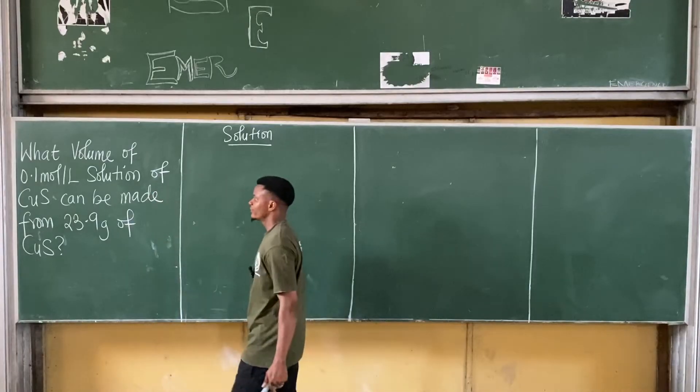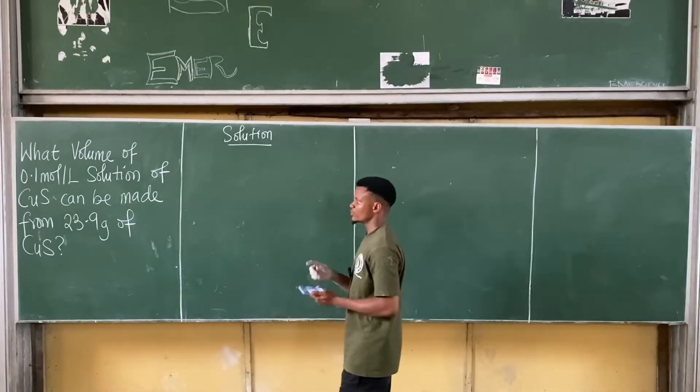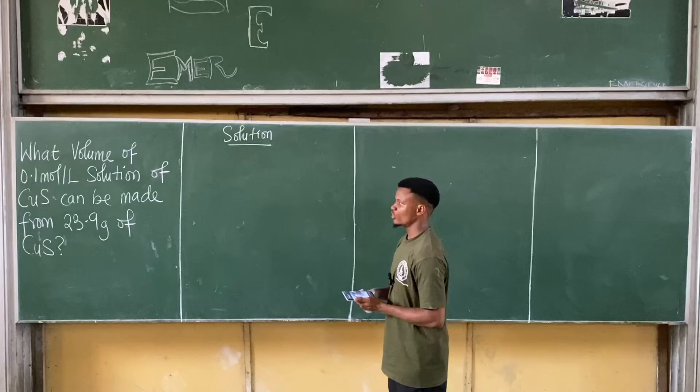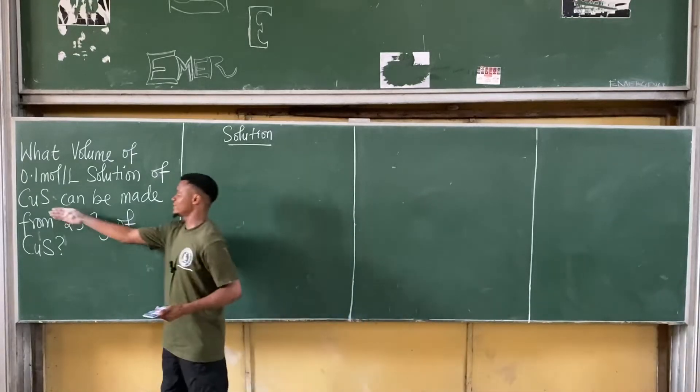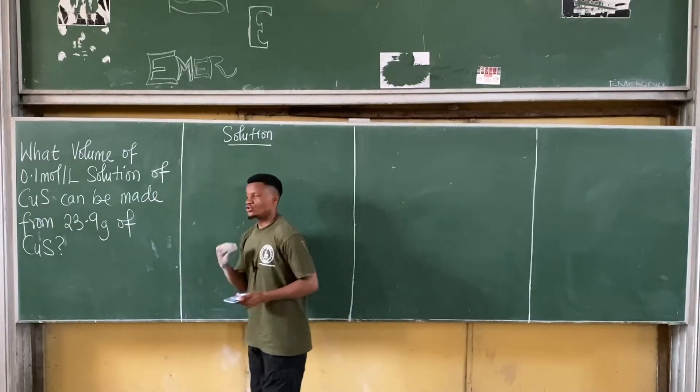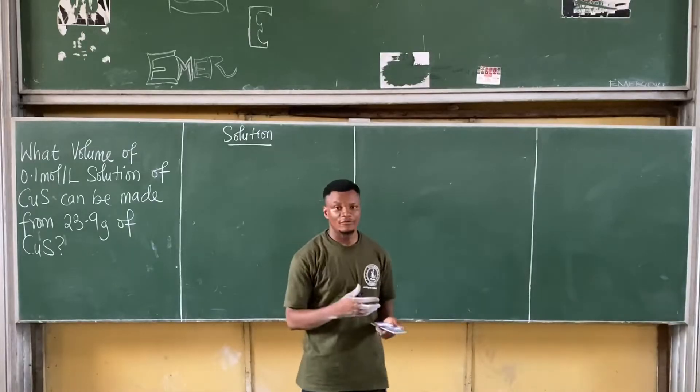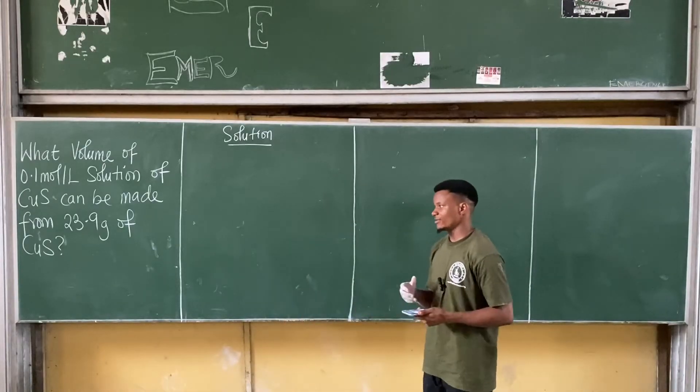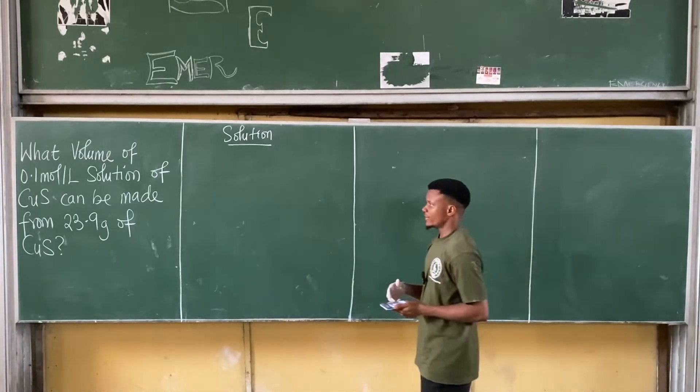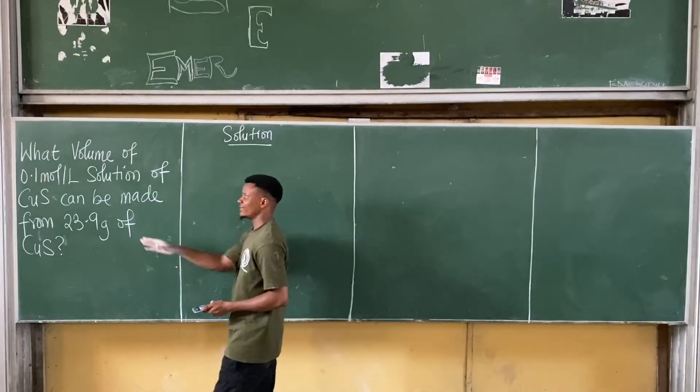So the question is, what volume of 0.1 mole per liter solution of copper sulfide can be made from 23.9 gram of copper sulfide or copper 2 sulfide? So in this question here, we have to find volume.